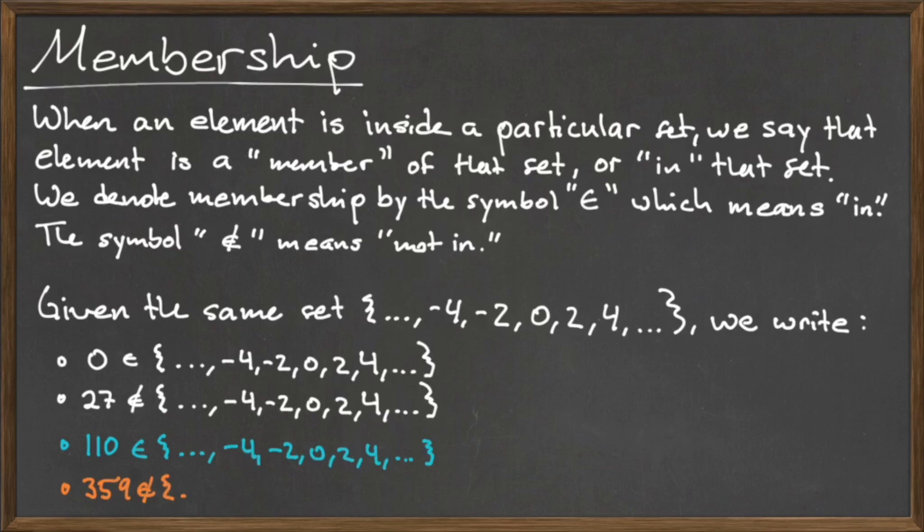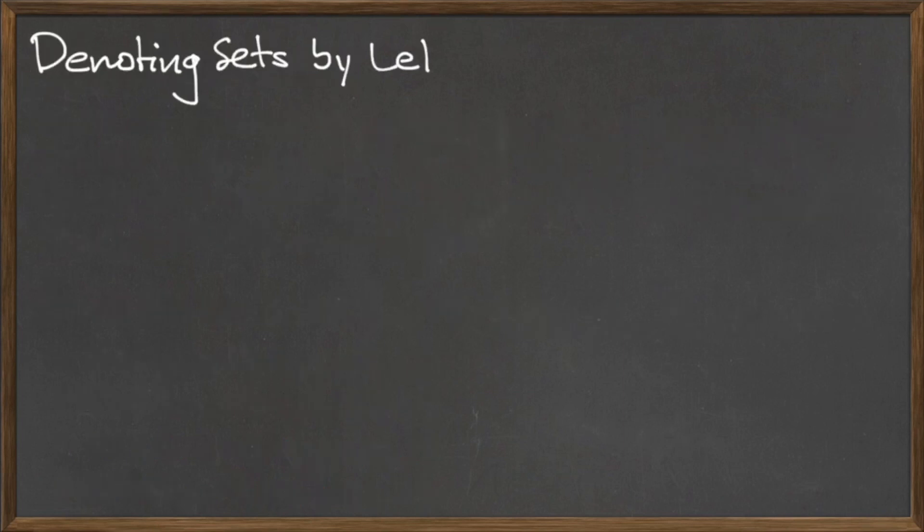Since 110 mod 2 is equal to 0, 110 is a member of the set of even integers, so we write this. Likewise, 359 mod 2 is equal to 1, so 359 is not a member of the set of even integers, and we can write this.